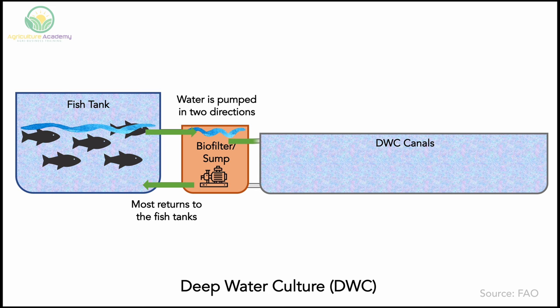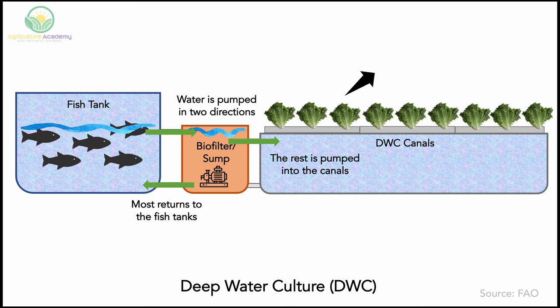These long canals are constantly filled with the nutrient-rich, oxygenated water from the biofilter tank. Rafts, conventionally made out of polystyrene or other lightweight materials, float in the canals on top of the water. The plants are held in place in these rafts by small holes or baskets. The water passively exits the canals and returns to the biofilter tank, and so the process is continually repeated.